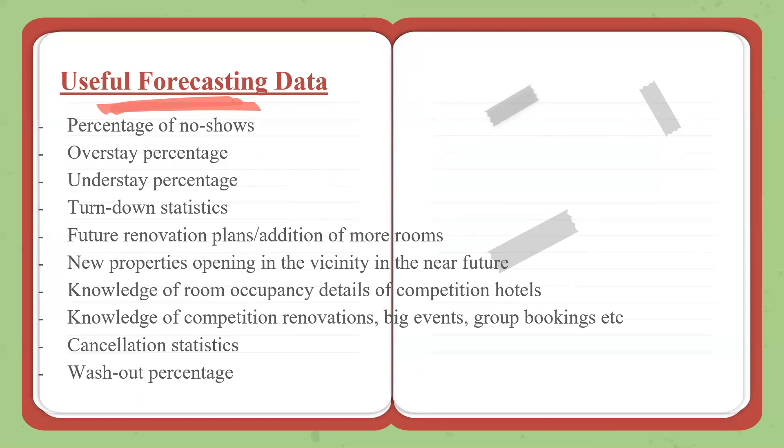We are going to do these formulas in the next series, next video in the series, part three, which is the last one. Percentage of no-shows, overstay percentage—how many guests typically tend to extend their stay, understays—how many check out before their date of departure, turn-down statistics, what have you, how many guests have you turned down because of no rooms or no reservations.